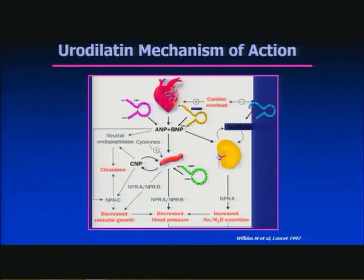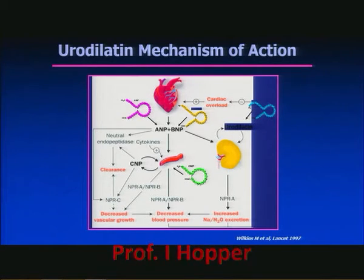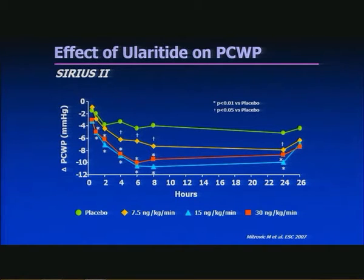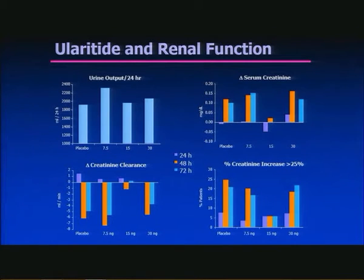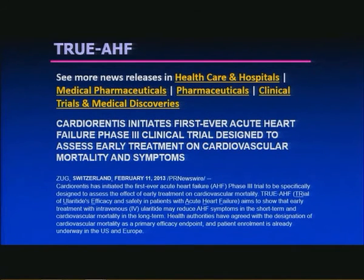The next molecule is ularitide — urodilatin — which is produced in the kidneys and binds to the NPR-A receptor in the collecting duct, causing sodium and water excretion. A trial in 221 patients with ADHF, low cardiac index, and high PCWP showed statistically significant reductions in pulmonary capillary wedge pressure at a dose of 15 micrograms per kilogram per minute, with no renal injury or decline, and an increase in cardiac output without compromising the MAP-to-right-atrial gradient. This drug is currently in Phase III trials (TRUE-HF).